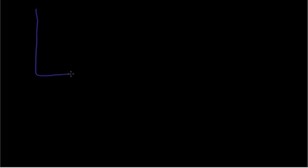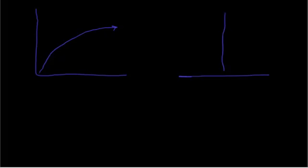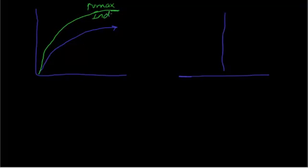Let's make a quick summary about the four major curves that we already discussed. You remember the curve discussed in the first video, and the other curve discussed in the second video of enzyme kinetics. This is the control curve. When you increase the Vmax to a higher level, the Km will not change — we call this curve induction, as discussed in the first video.